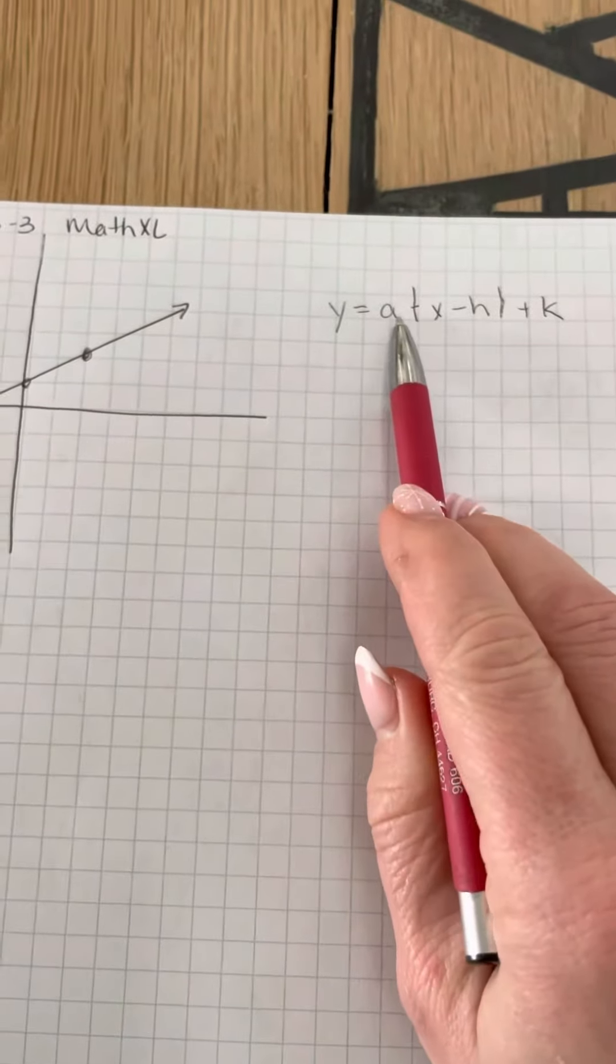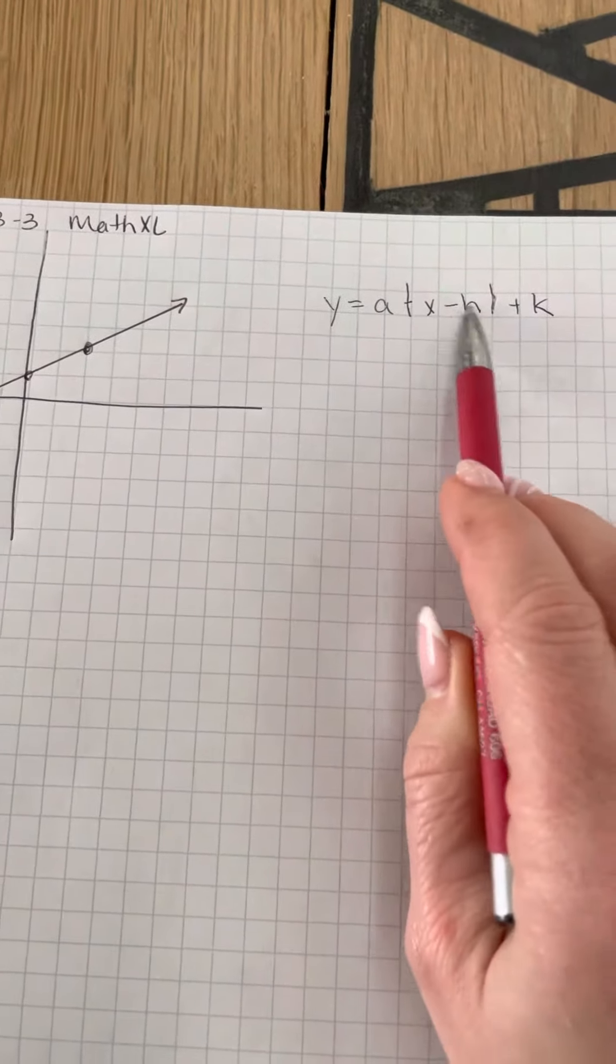Where A is your slope, HK is your vertex. And don't forget, inside we always think opposite.